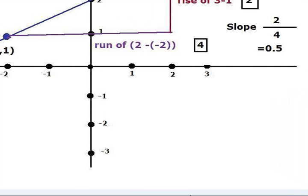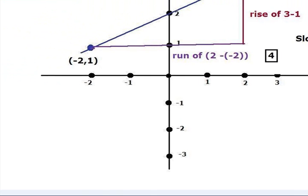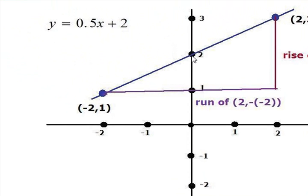The slope is 2 over 4, that is 0.5, and you can notice that the y-intercept is 2. Therefore, the equation of the line is y equals 0.5x plus 2.